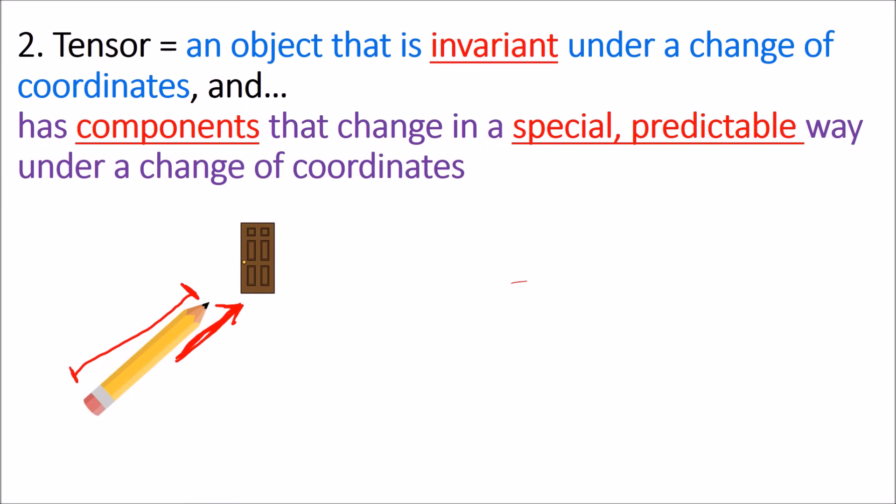Now, the second part. What does it mean for components to transform predictably under a change of coordinates? Well, to start off, let's introduce a coordinate system here. So we have a nice 3D coordinate system with three vectors here that give us the main coordinate directions.